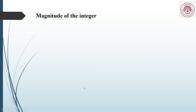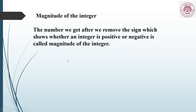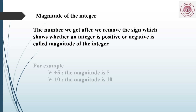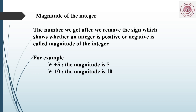Now another concept: magnitude of an integer. The number we get after we remove the sign which shows whether an integer is positive or negative is called the magnitude of the integer. For example, plus 5 has magnitude 5; minus 10 has magnitude 10; plus 38 has magnitude 38; minus 23 has magnitude 23.